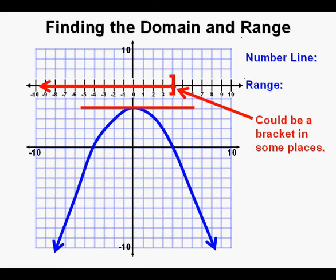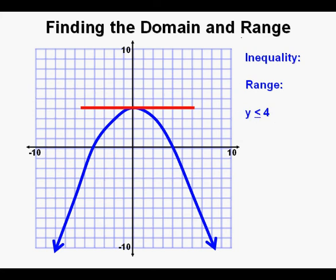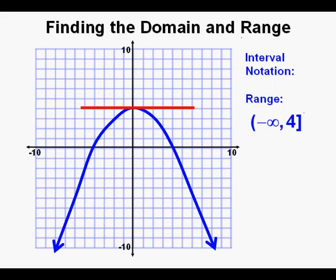Is math the same everywhere? Yes, but sometimes the notation is a little different depending on where you are. As an inequality we would show this as y is less than or equal to 4. In set notation we have y such that y is less than or equal to 4 — that little vertical bar means 'such that.' Finally in interval notation we have open parentheses, negative infinity, comma, 4, then a closing bracket.